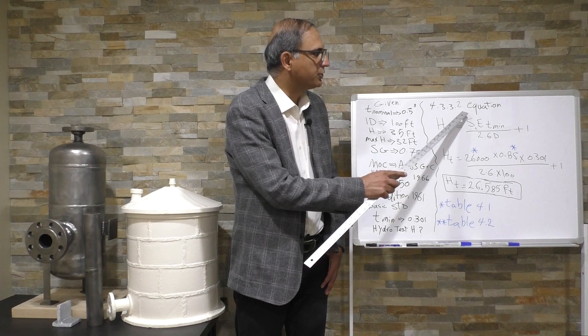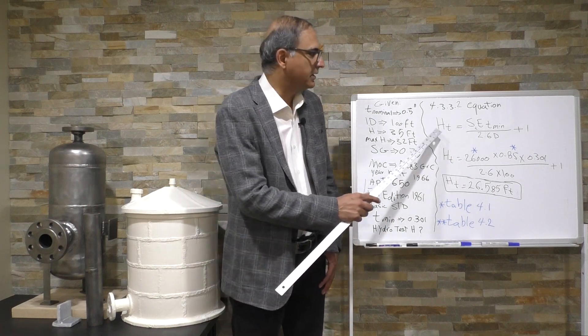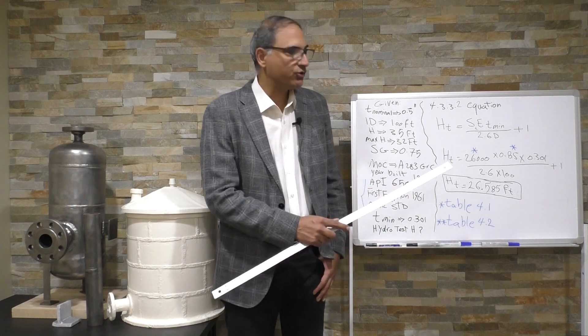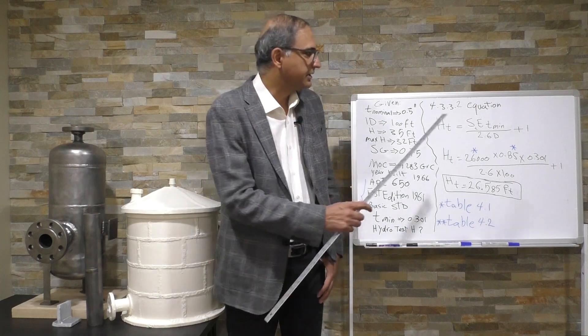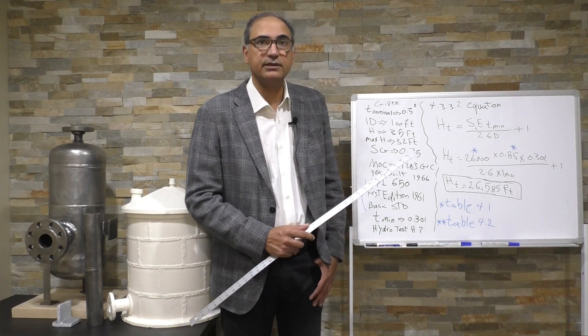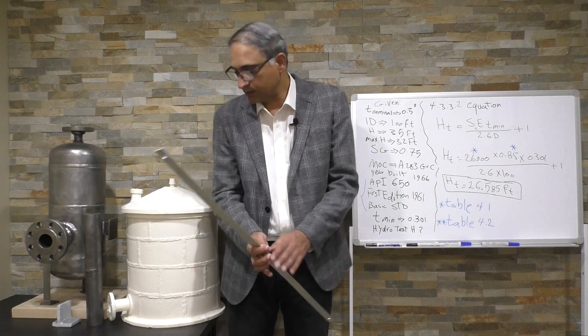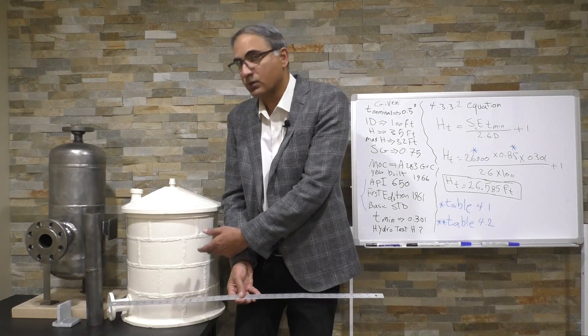Section 4.3.3.3.2 is the equation for calculation of the hydrostatic testing height, so this is the formula. S is the allowable stress for first shell course, depends on this material, ASTM A283 grade C.